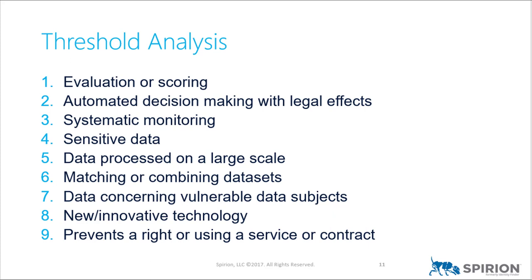Criterion eight: new or innovative technology. Big data is so common here — if you're one of those companies that processes other people's data using big data to identify trends or how people may react to ad campaigns, processing that using big data is a great opportunity for qualifying under this criterion, because it's a new use of data not thought of at the time the underlying data was created. You wouldn't know how to limit collection to protect against that.